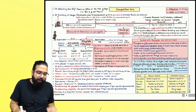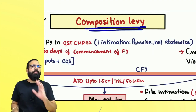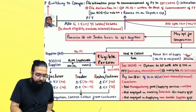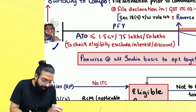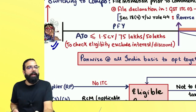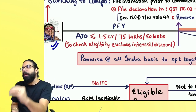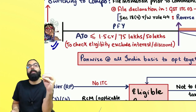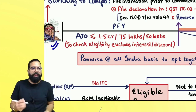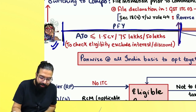That simpler option is the composition scheme, which is a composition levy under Section 10. The government went ahead and introduced this scheme for small manufacturers, traders, and restaurants, telling them: we will give you this scheme.